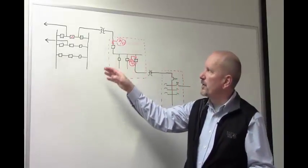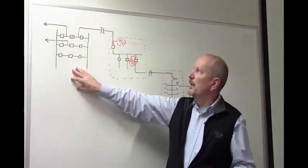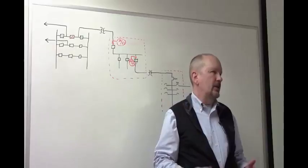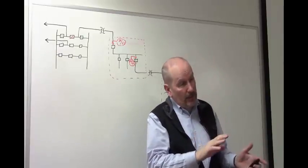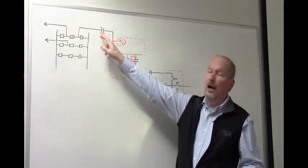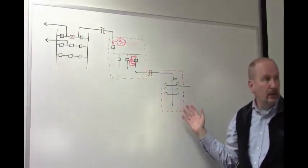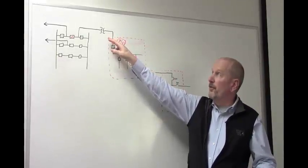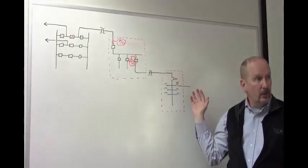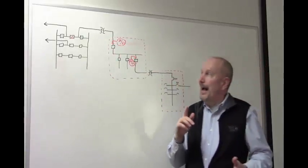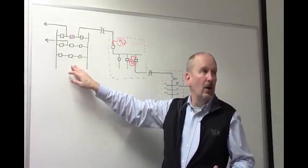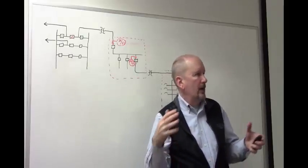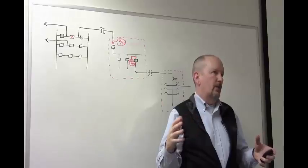Now let's take another step up in voltage to the transmission system. It gets a lot more complicated because it's no longer a radial system. In a radial system you just have a source upstream and none downstream, so you can safely assume all fault current flows in one direction. But at transmission level, you no longer have that assumption.